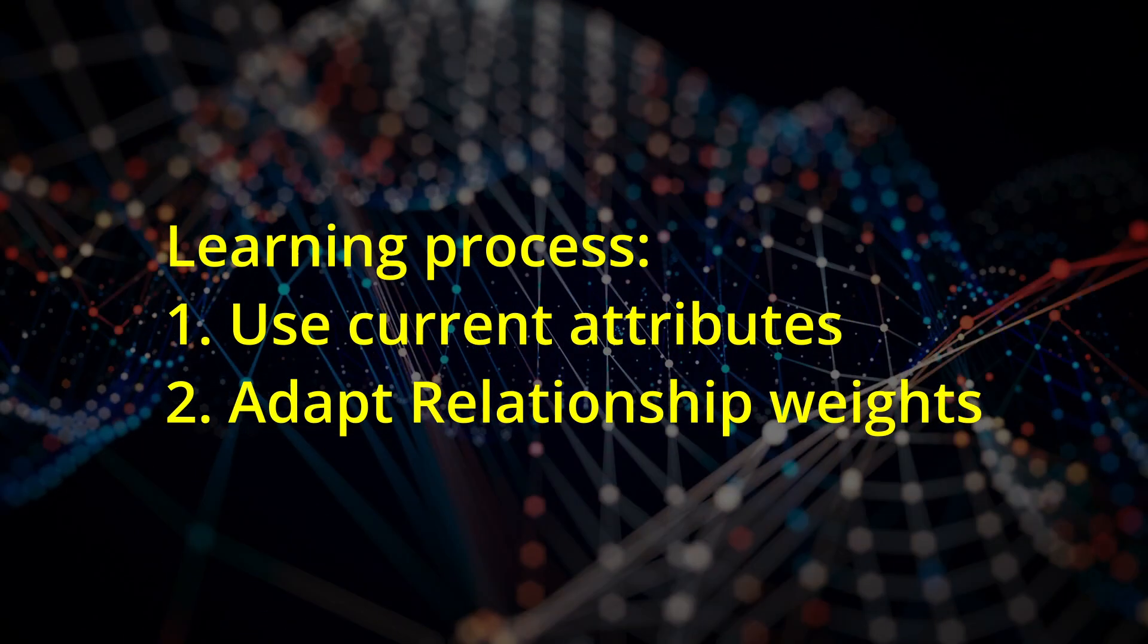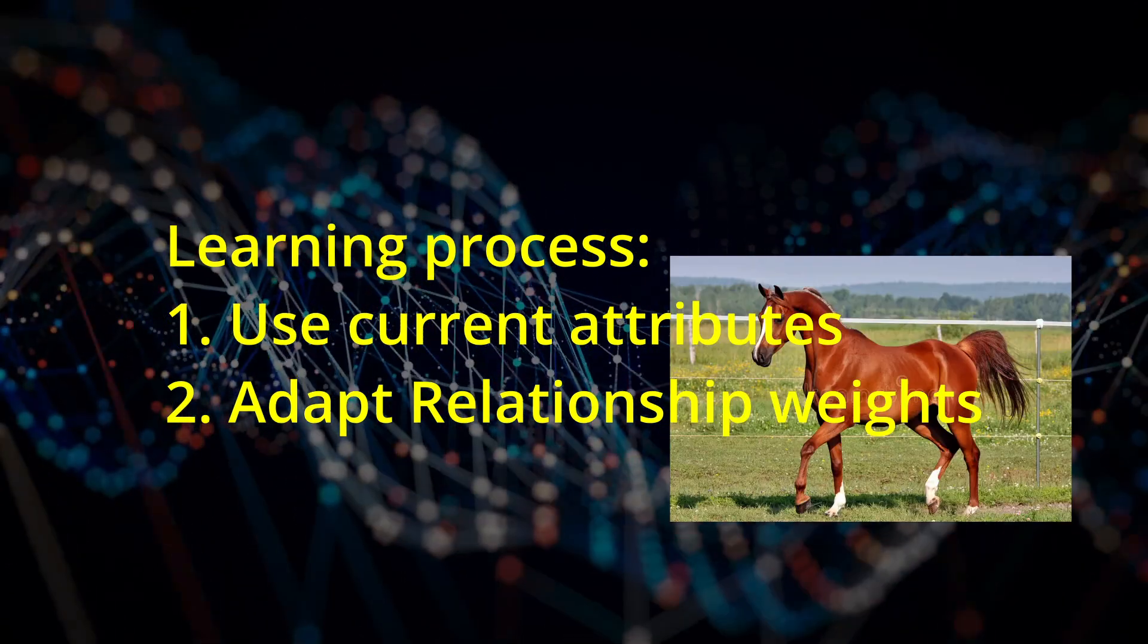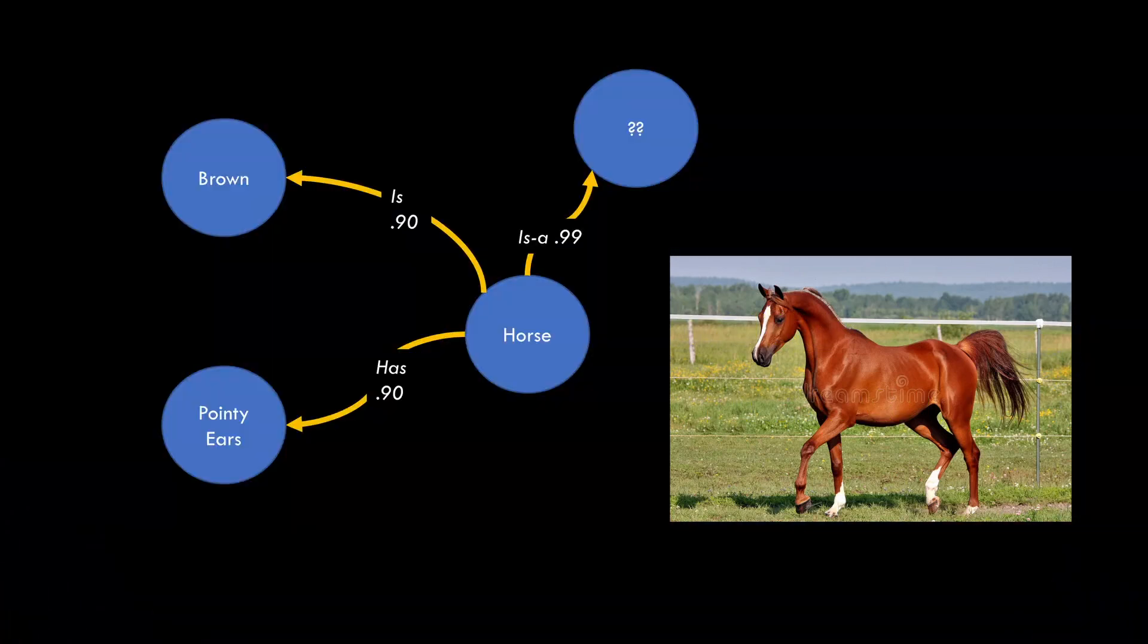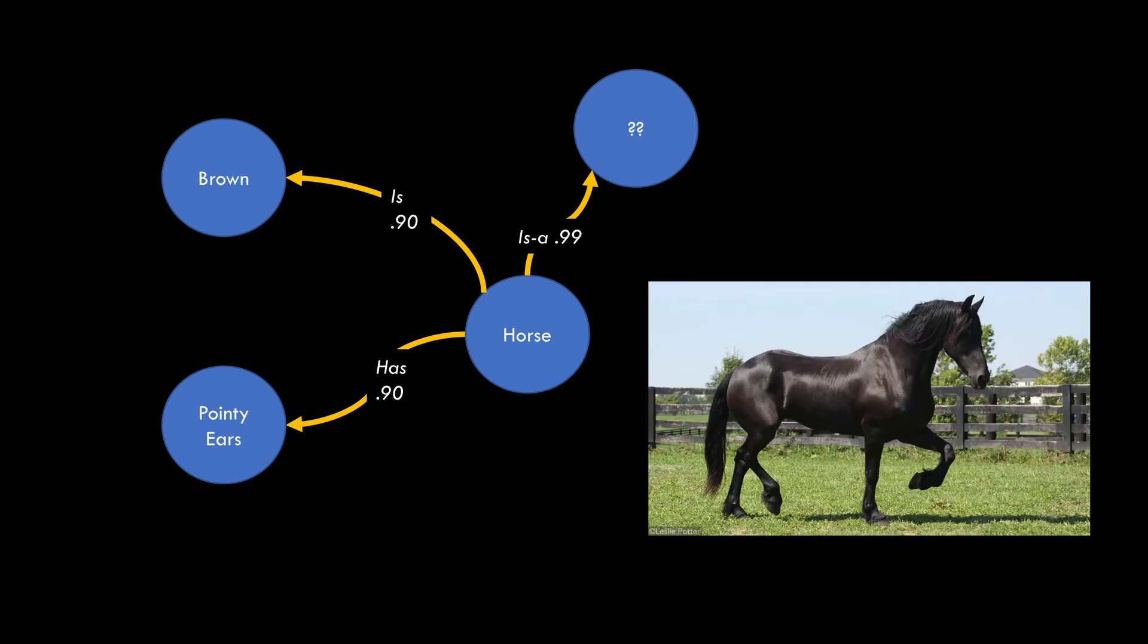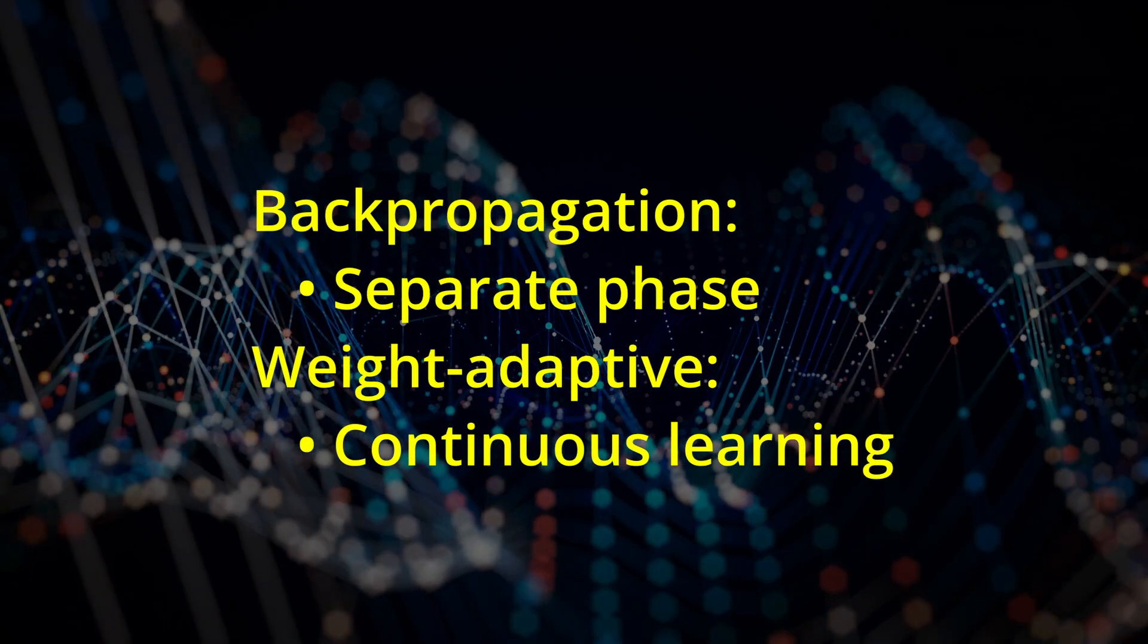When a new horse thing is created, it gets relationships to the attributes being sensed at the time. That is, if the first horse encountered is brown and has pointy ears, the system will reasonably assume that all horses are brown and have pointy ears. When the system subsequently encounters a black horse with pointy ears, the confidence of the horse's brown relationship will be reduced, while the confidence of the horse has pointy ears relationship will be increased. This way, the system continuously adapts and corrects for conflicting information.